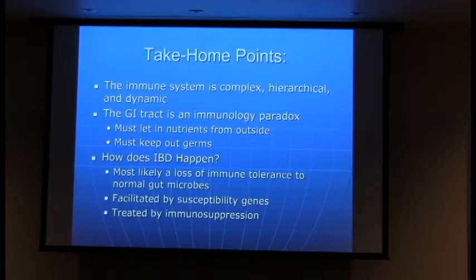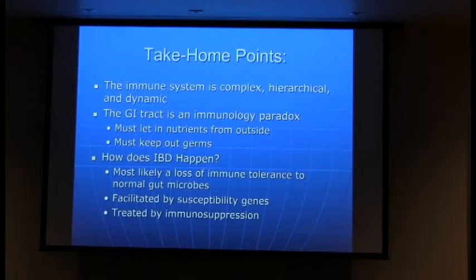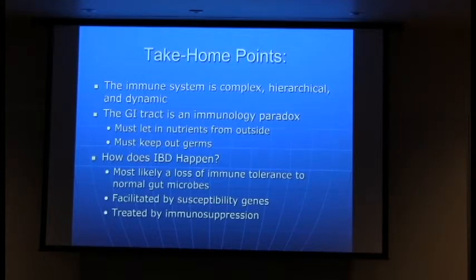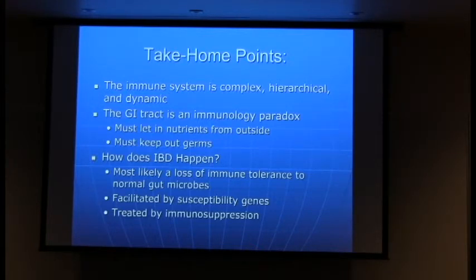In conclusion: the immune system is complicated, hierarchical, and dynamic. The gut is a complex immunology paradox — it has to let in nutrients from outside while keeping out germs. As for how IBD happens, we don't really know, but it's most likely a loss of immune tolerance to normal gut microbes, facilitated by key genes. We treat it with immunosuppression at present, but our goal is to come up with more targeted therapies to more safely alter the immune system or potentially cure this pair of diseases.